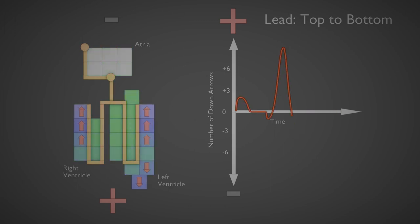One more way to look at this is the graph's vertical axis is a line connecting the negative electrode to the positive electrode. And that's what we call a lead.